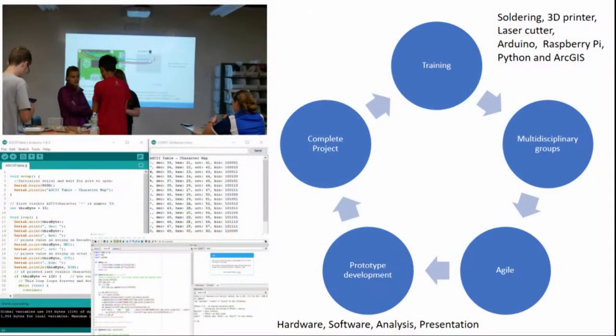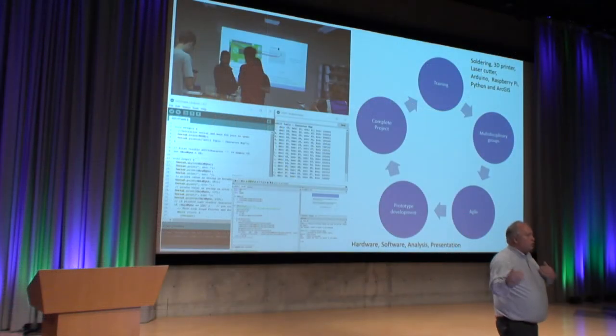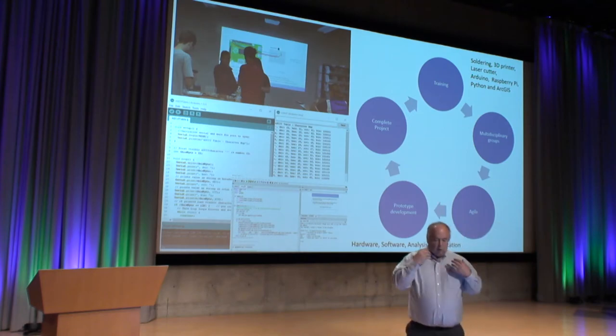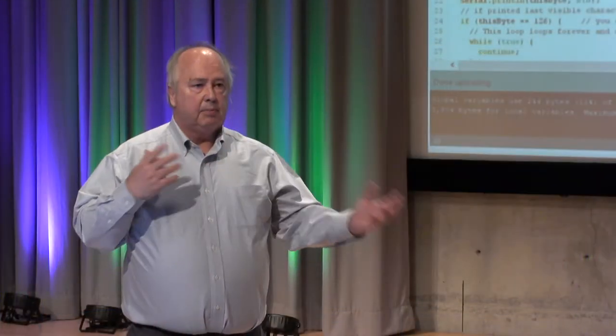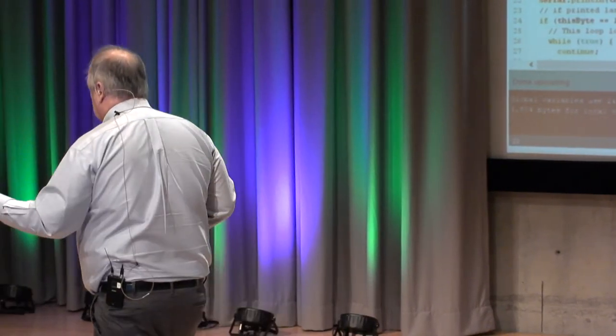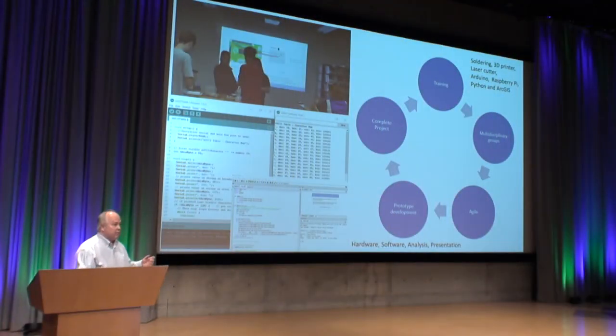When we work with a student on a project, they'll have different things they want to do. We use an Agile-based system — a rapid approach where you build a minimum viable product in a very short period of time. We'll talk to them about the project, get people involved, and train them. We'll teach them soldering, 3D printing, laser cutting, Arduino, and Raspberry Pi. We do quick training sessions, and we do many of them.